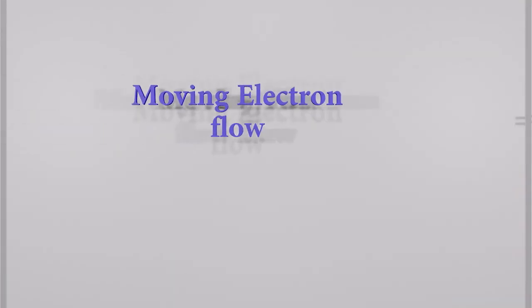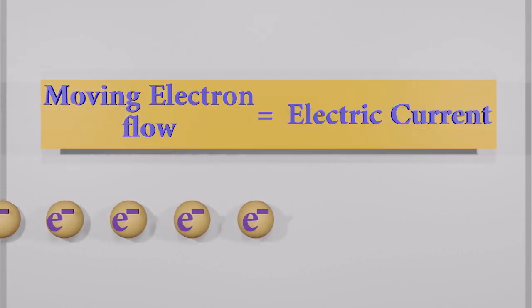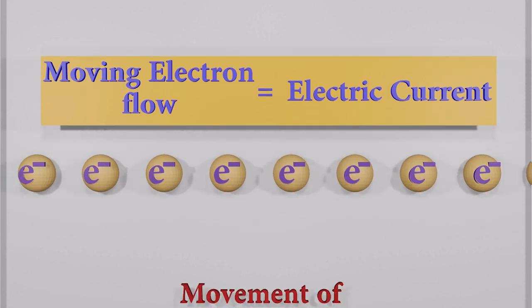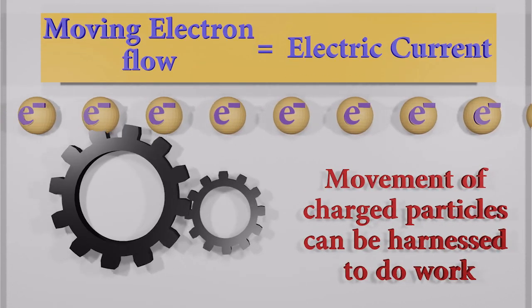We know moving electron flow can be known as a current. We can convert the energy of moving electrons to do work.